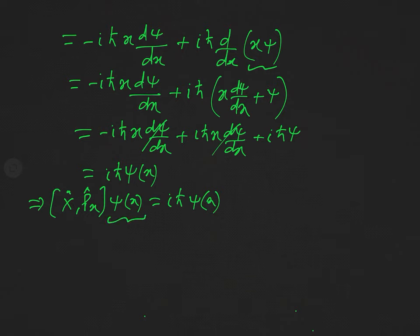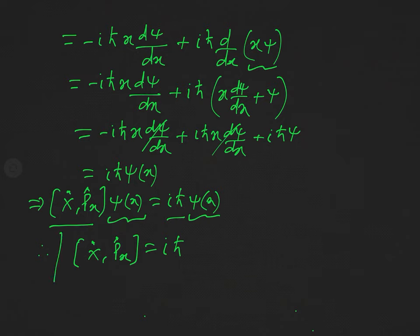Since the function ψ(x) on the right-hand side is unchanged, this operator means multiplication by iħ. Therefore, the commutator of the position operator x̂ with the momentum operator p̂x is equal to iħ. This is a most important result, and in examinations objective questions are asked directly on this concept.